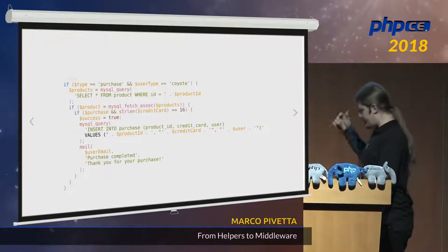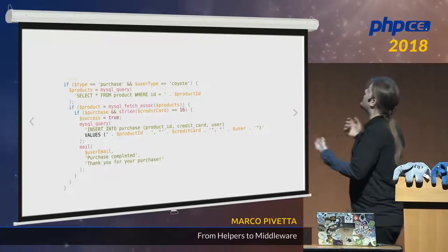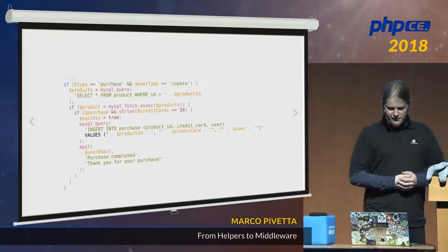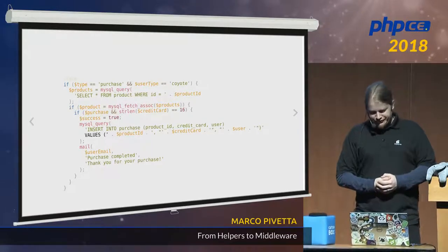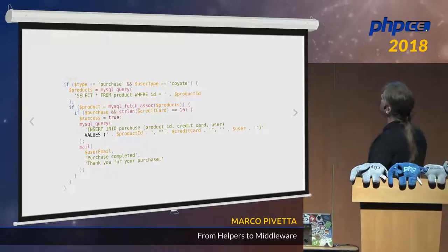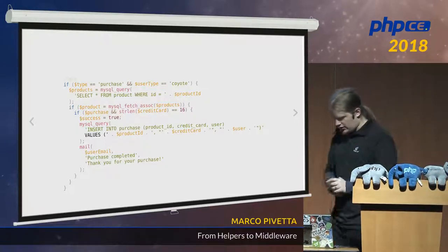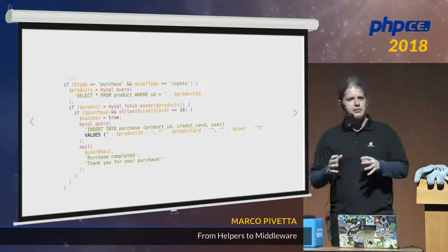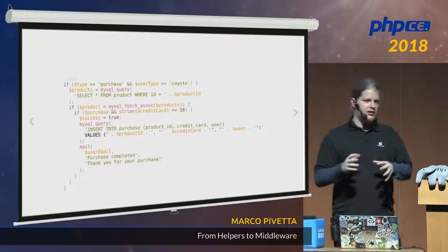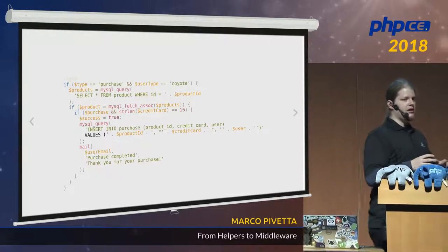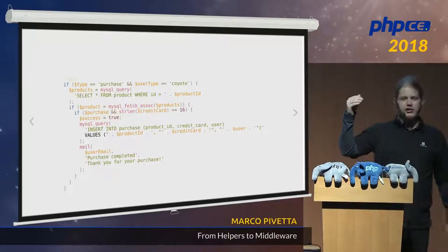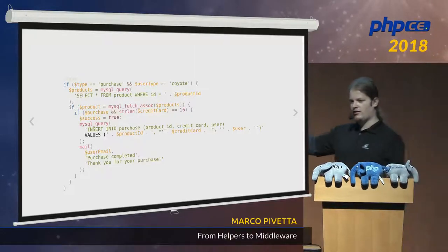This was our startup script and then we have our main application — all squashed together in one place. This is our business logic and rendering, all in one place. Honestly I've put it quite nicely here, because lots of people coded stuff like 'if variable is true' two lines below 'variable = true' and stuff like that.